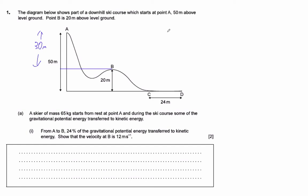Okay, the total potential energy is MGH. So that's 65 times 9.81 times 30. That total energy is...